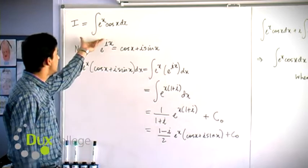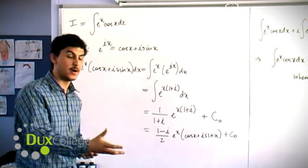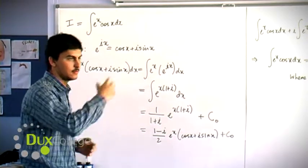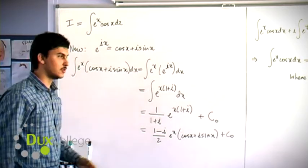Previously, I found this integral by considering a recurrence, integrating by parts twice, then rearranging until I got the integral again and equating it. Now I'm going to show you a different approach to solving this question.